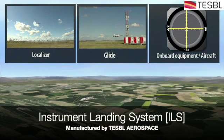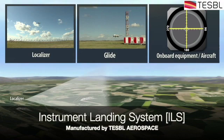On the ground, the localizer antenna, situated at the end of the runway, transmits a radio beam that indicates the runway center line. A second transmitter, the glide slope, is situated at the edge of the runway and its beam indicates the correct vertical descent profile.